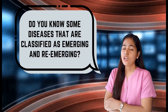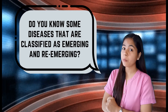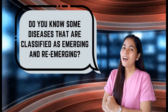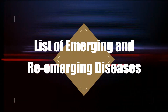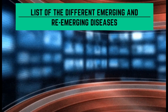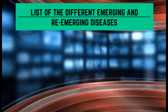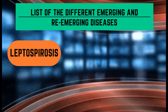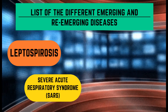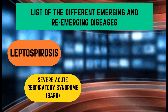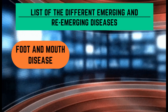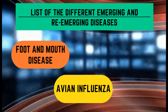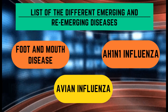Do you know some diseases that are classified as emerging and re-emerging? Here is the list of the different emerging and re-emerging diseases: one, Leptospirosis; two, Severe Acute Respiratory Syndrome or SARS; three, Chikungunya; four, Meningococcemia; five, Foot and Mouth Disease; six, Avian Influenza; and seven, AH1N1 Influenza.